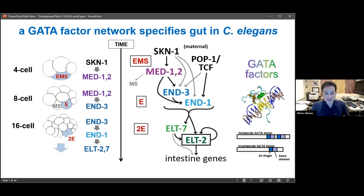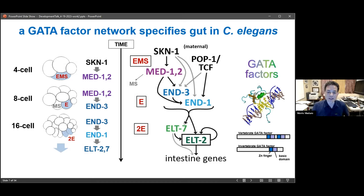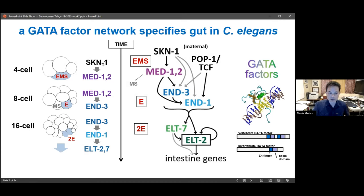END-1 and END-3 then hand off expression control to ELT-2 and ELT-7. ELT-2 is the main intestinal factor that keeps intestinal differentiation maintained for the lifespan of the animal, whereas the upstream factors are all transient. An additional maternal factor, the TCF Wnt-type effector POP-1, contributes regulatory input into specification as well. This deployment of a gene network in space and time hands off transcriptional control to subsequent genes in the network; all of these genes are structurally related and bind similar targets.